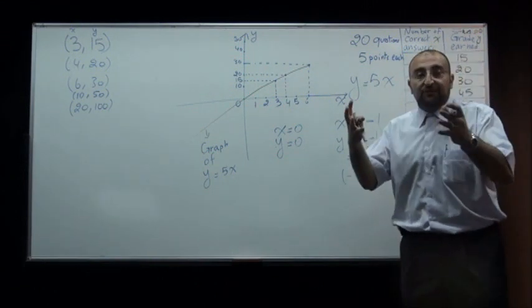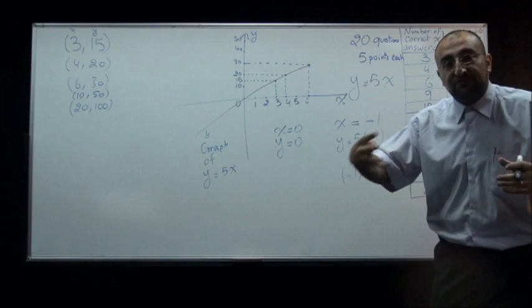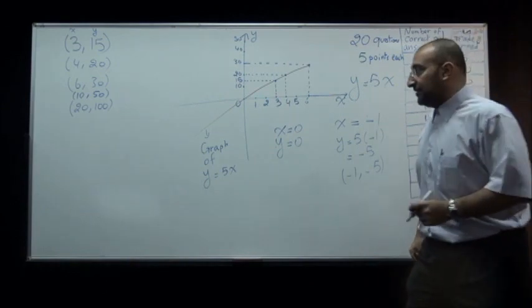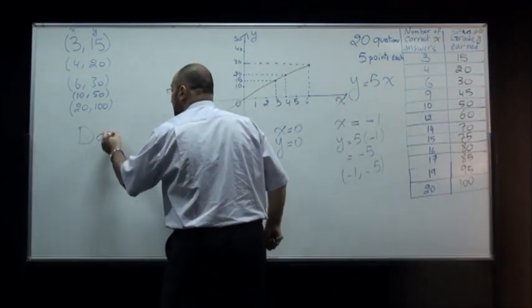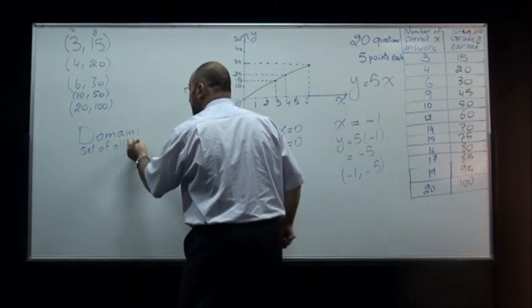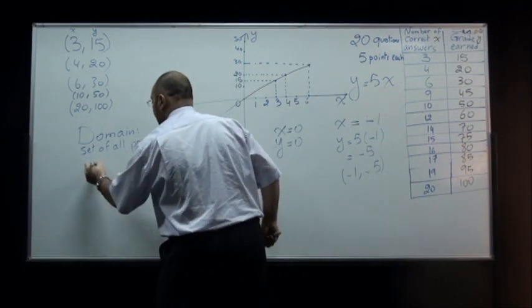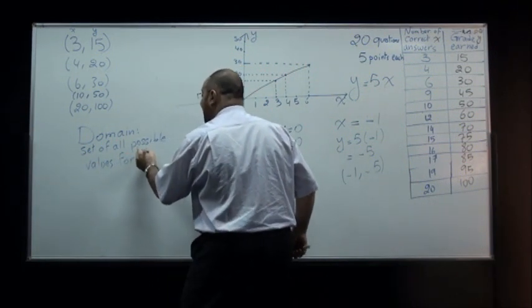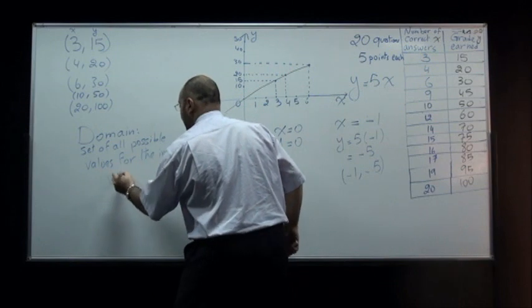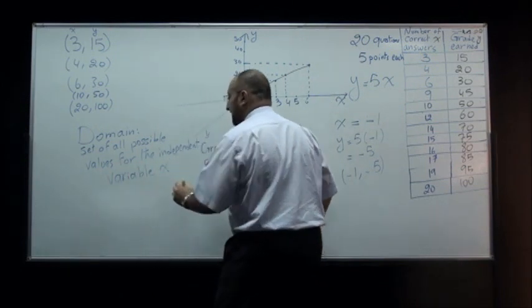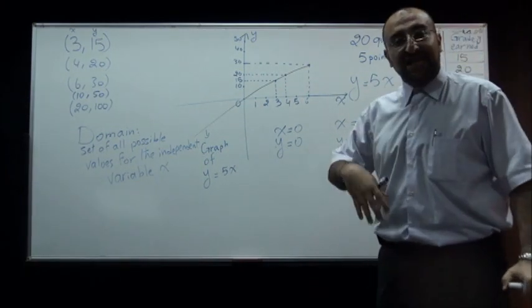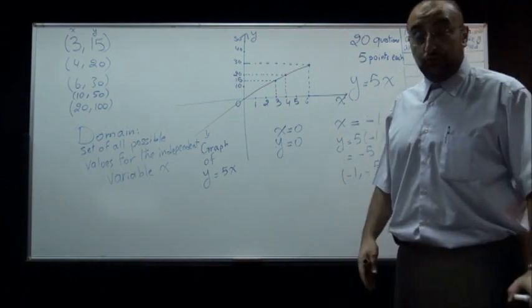We call the set of numbers that I can choose values to replace the independent variable with the domain of the function. And so the word domain means set of all possible values for the independent variable. In this case it's called x, but I don't want to use x all the time because the independent variable can be represented by any variable, any letter of the alphabet you may wish to use.